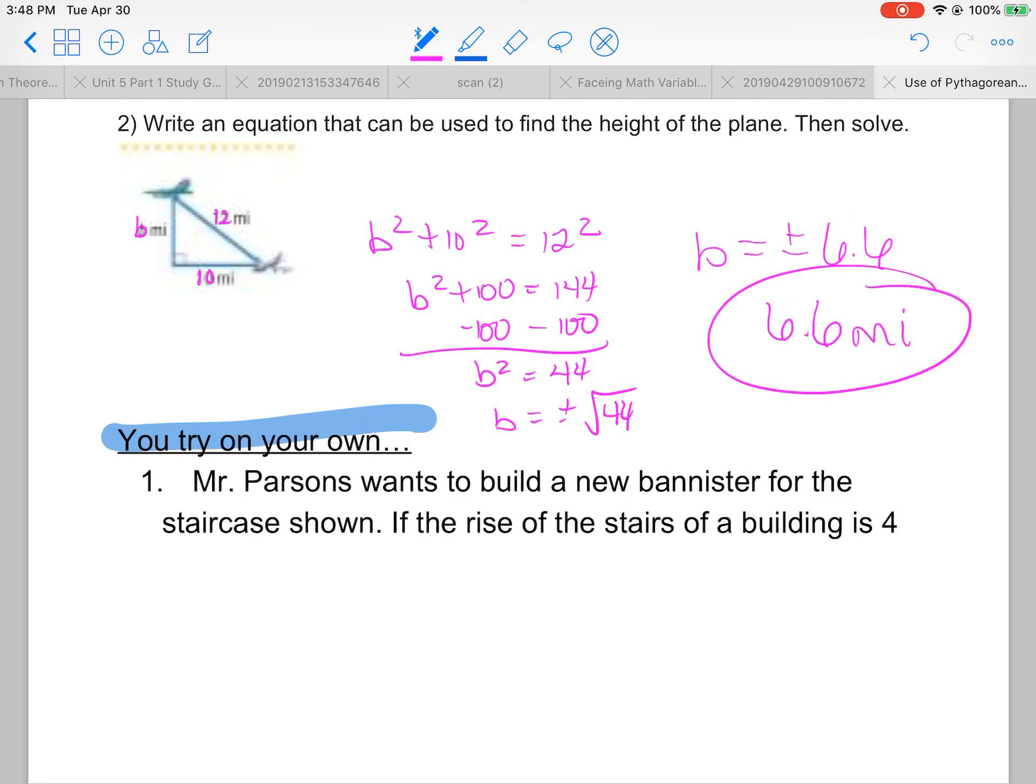This is one that you need to do. Mr. Parsons wants to build a new banister for the staircase shown. If the rise of the stairs, that obviously means the height or going up.